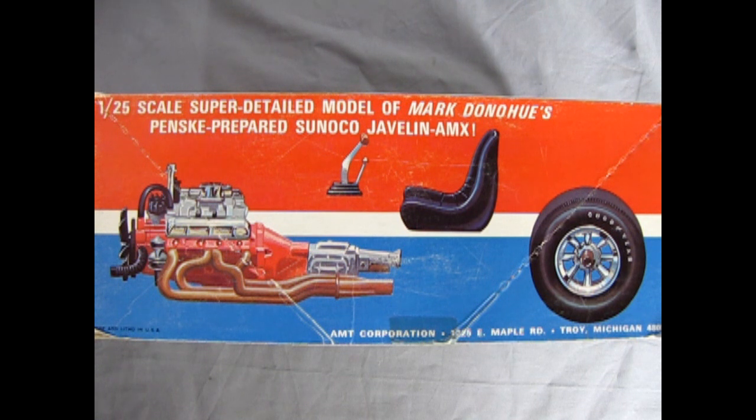In 1971, of the 10 races that the over 2.5 liter class cars participated in, Donahue won seven of them, including the final six races in a row, with AMC winning the manufacturer's championship for the first time ever. In the final race of the season, Javelins finished in first, second, and third place with George Fulmer becoming the only other Javelin driver to win besides Donahue.